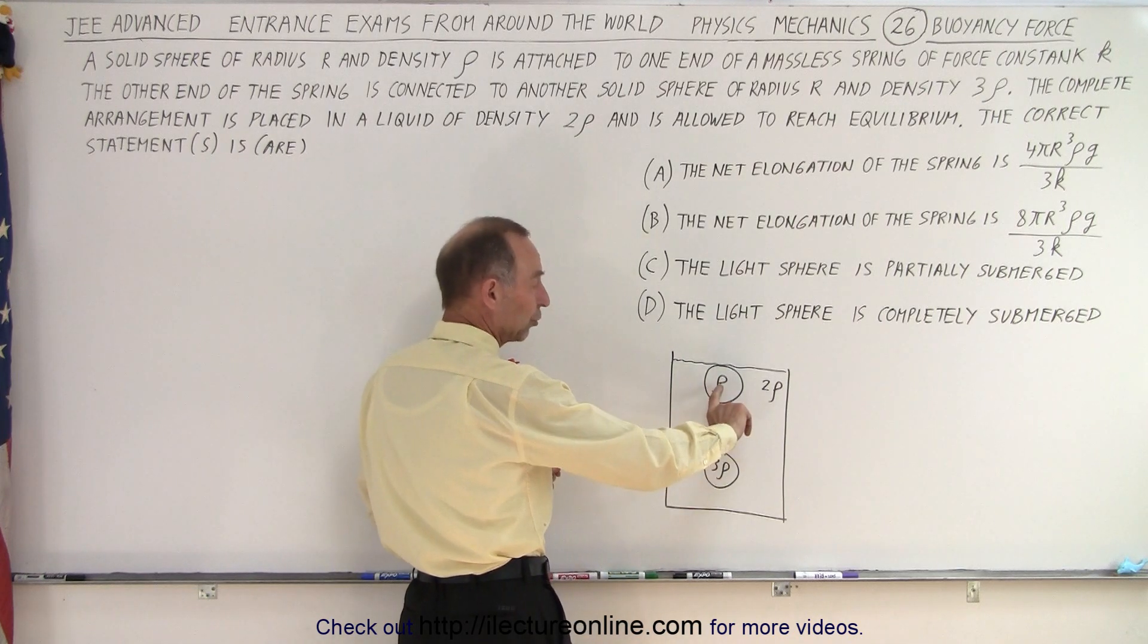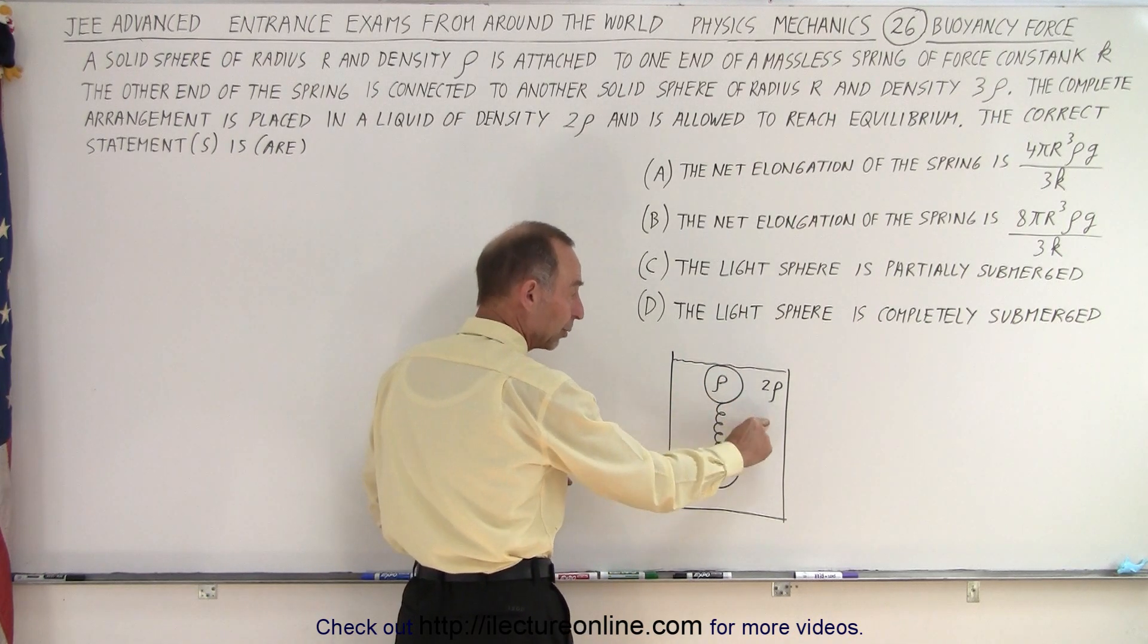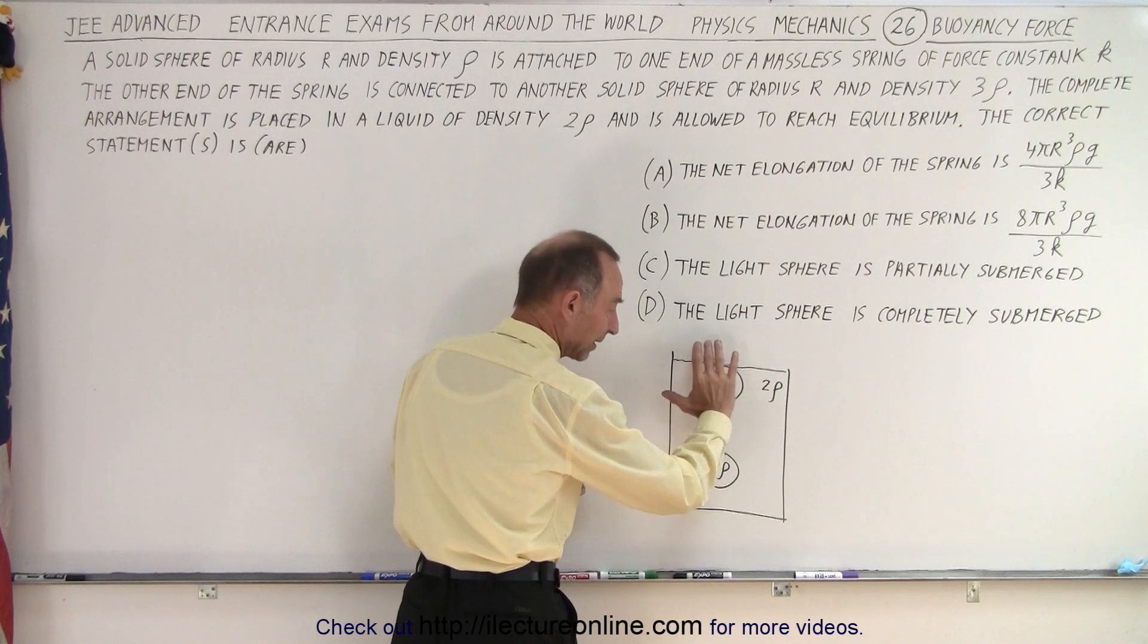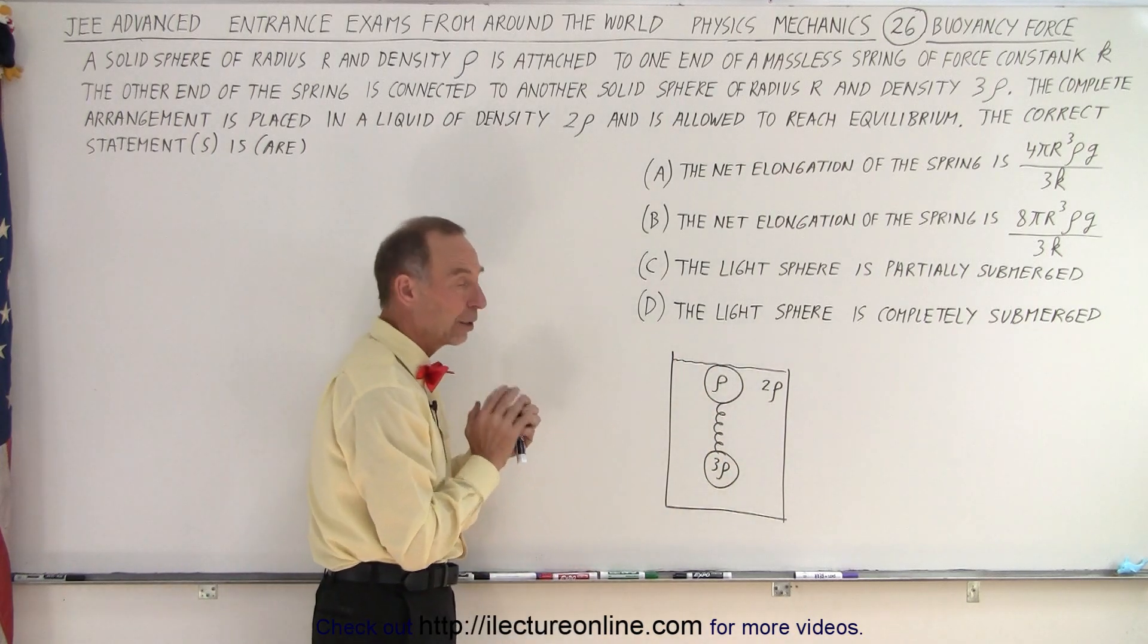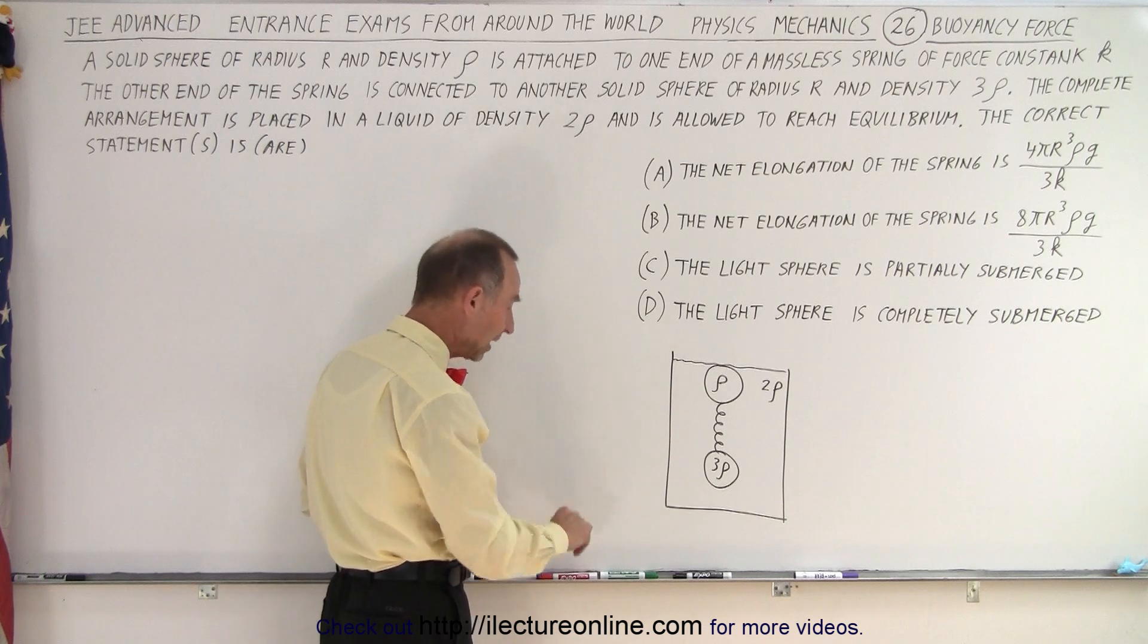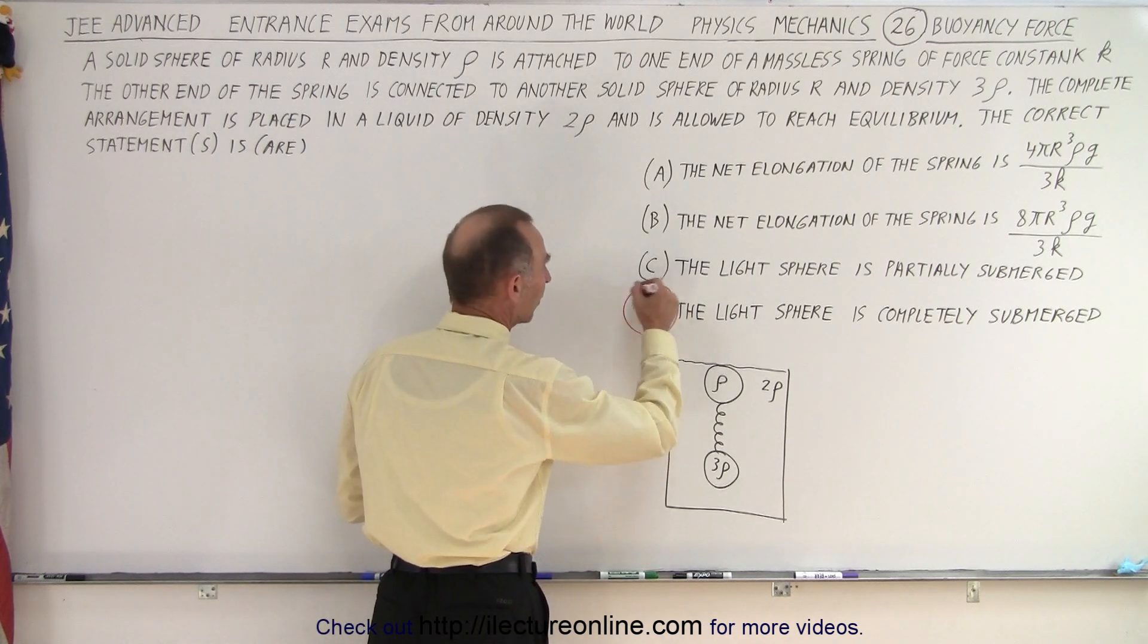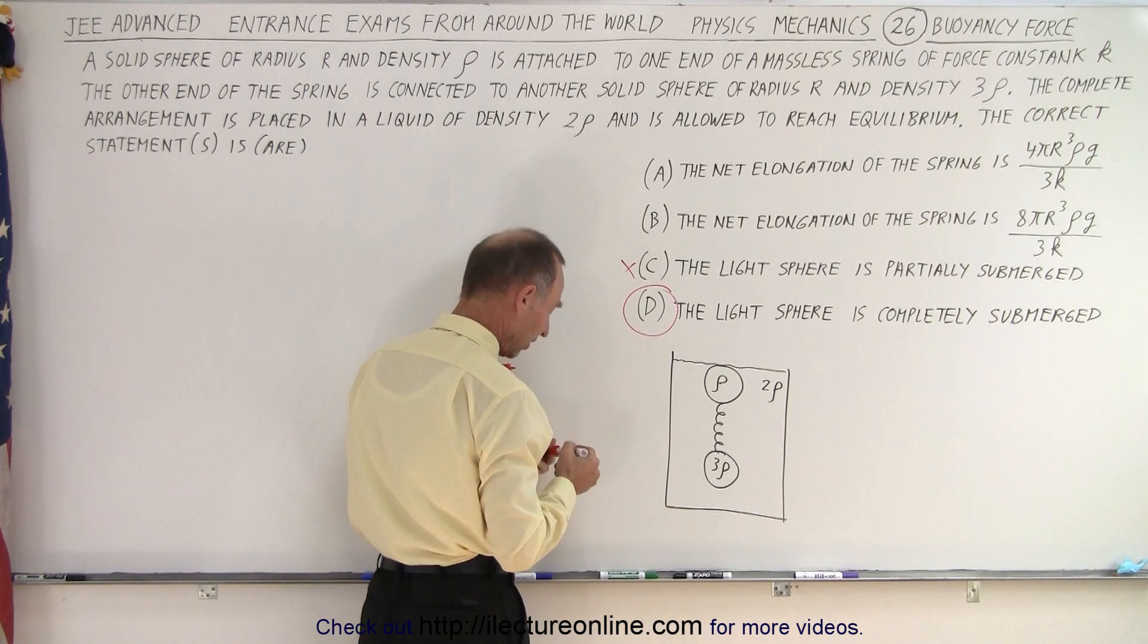If you think about this, the average density of the two spheres, since they're the same size is 2 rho, the liquid is 2 rho. So then you expect things to be just like that. Which means that the light sphere is completely submerged. That means D is correct and C is incorrect.